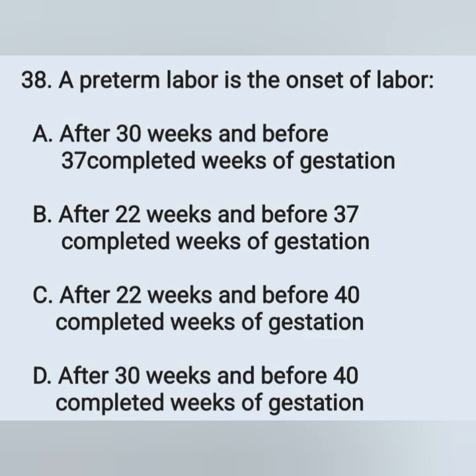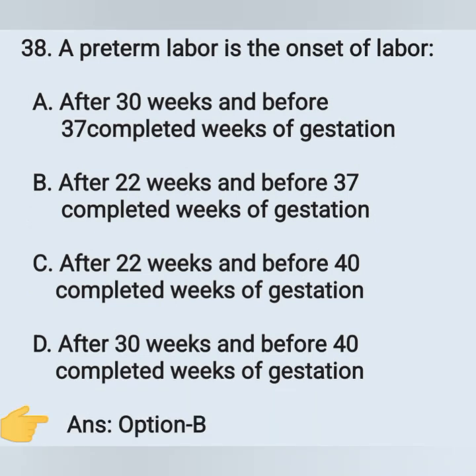Question 38: Preterm labor is the onset of labor — options: option A, after 30 weeks and before 37 completed weeks of gestation; option B, after 22 weeks and before 37 completed weeks of gestation; option C, after 22 weeks and before 40 completed weeks; option D, after 30 weeks and before 40 completed weeks. Preterm labor means after 22 weeks and before 37 completed weeks of gestation. Option B is the correct answer.